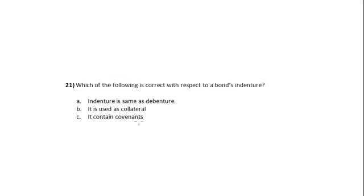Which of the following is correct with regards to a bond's indenture? a) Indenture is same as debenture, b) It is used as collateral, c) It contains covenants. Now, a bond's indenture specifies all the rights and obligations of the issuers and owners of a fixed income security. So it is a kind of document which specifies all